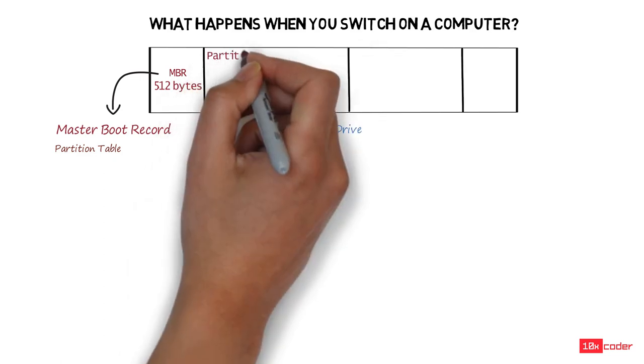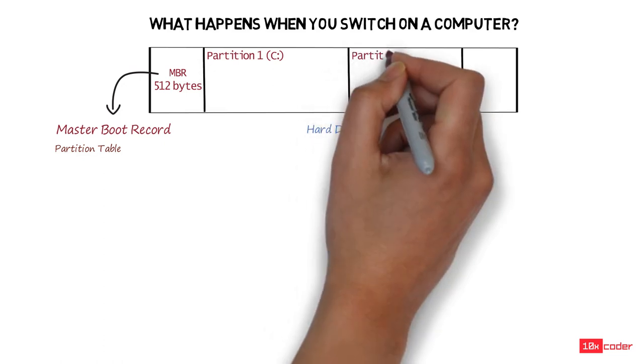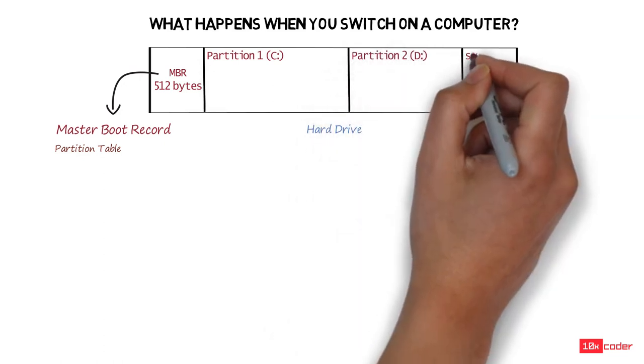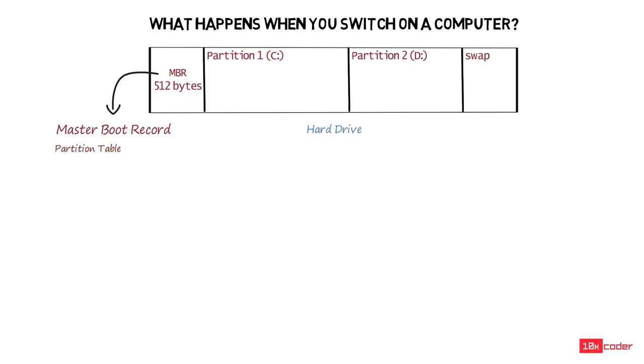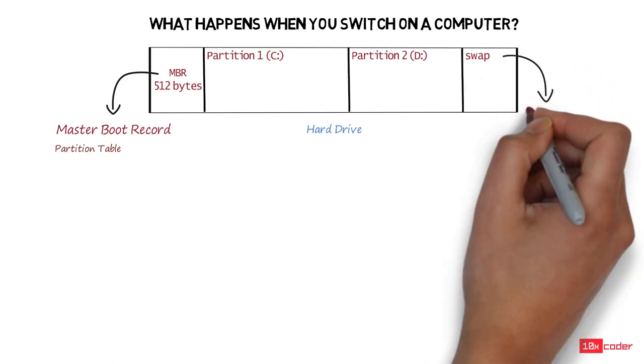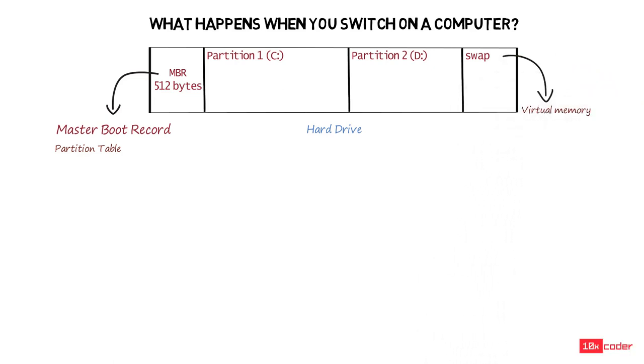For a Windows PC, these partitions are generally named C and D drives. At last, there is a small partition, generally a few GBs in size, that is called swap or virtual memory. Swap space is used by the computer to store data that would ideally be in RAM, but the RAM may not be big enough.